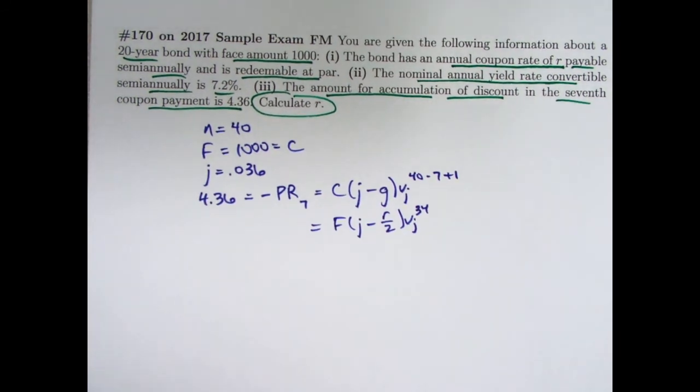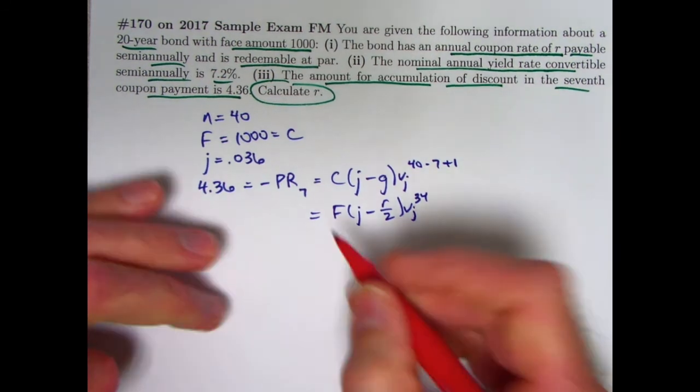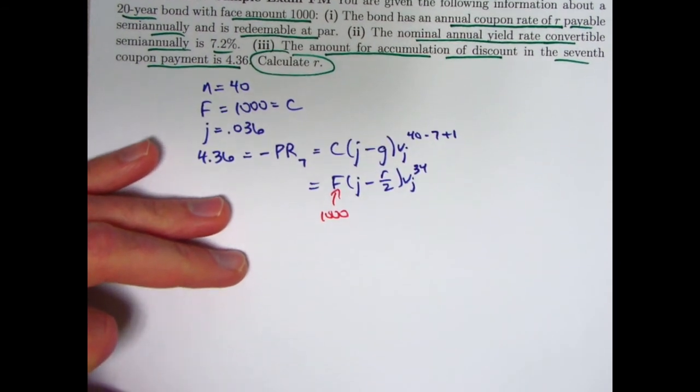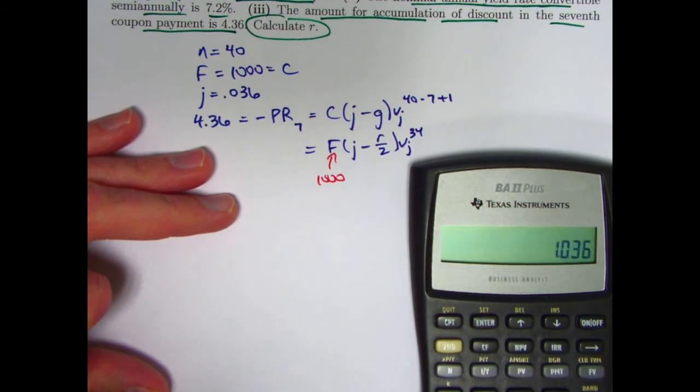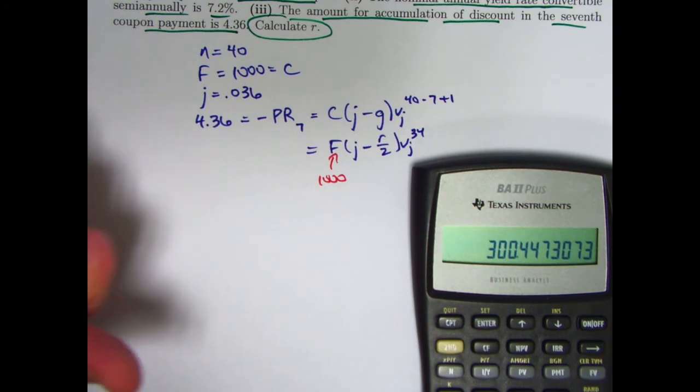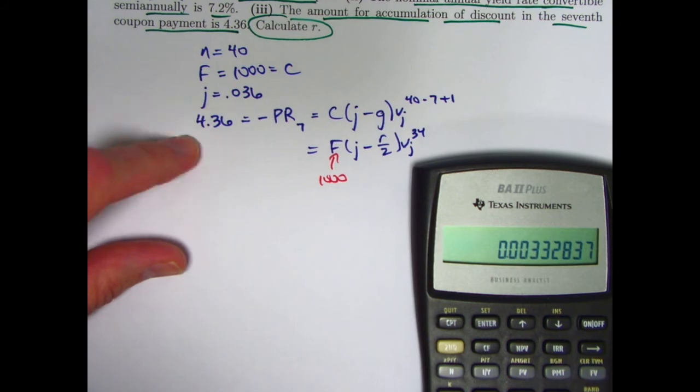So now it's a pretty easy problem from here. You just plug in the numbers you know and solve for what you don't know, which will be R. So this is 1,000 again. Let's figure out VJ to the 34th power. J is 0.036, so V is this. Raise that to the 34th power. Multiply by 1,000. That would be F times VJ to the 34th power. I need to divide both sides by that, so take its reciprocal. And multiply times 4.36.